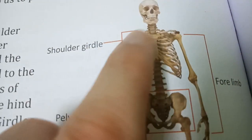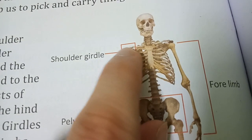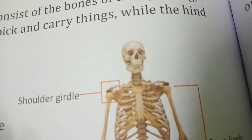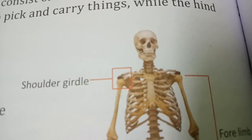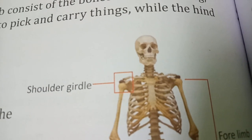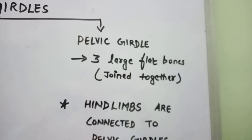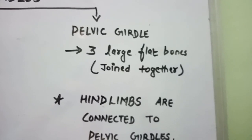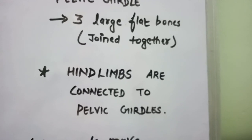The shoulder girdle consists of your collar bone and shoulder blade. You can touch your collar bone and feel it. At the back side you have the shoulder blade on the left and right side. Forelimbs are connected to the shoulder girdle. Inside the pelvic girdle we have three large flat bones which are joined together, and hind limbs are connected to the pelvic girdle.